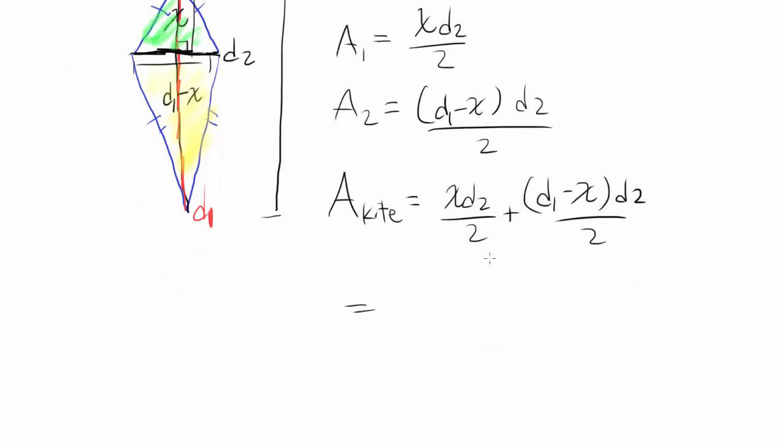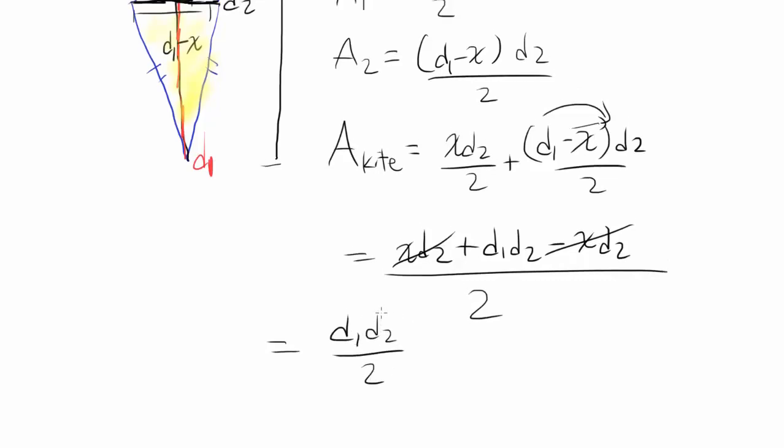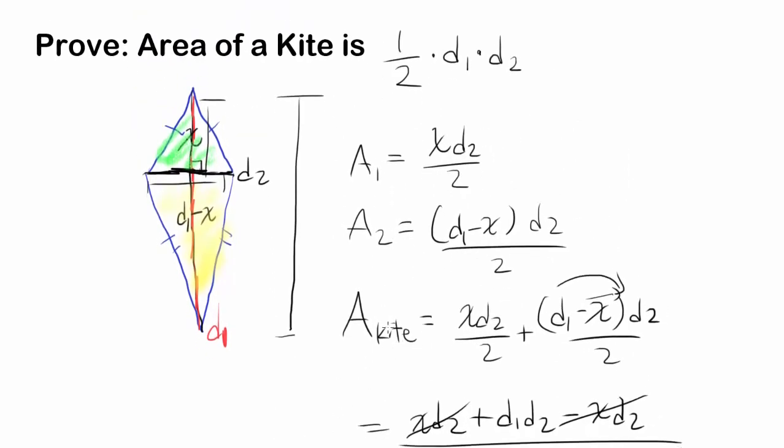We have common denominators so we can put everything over 2, and you have X D2, and let's distribute this. So you have plus D1 D2, distributing this minus X D2. Hey, X D2 cancel out. So we have area of a kite is one diagonal times the second diagonal divided by 2.